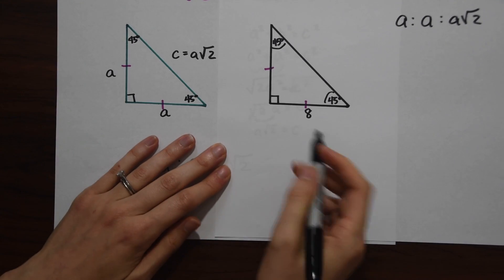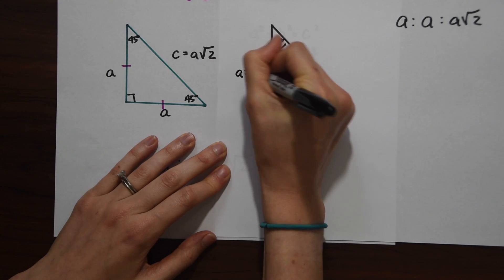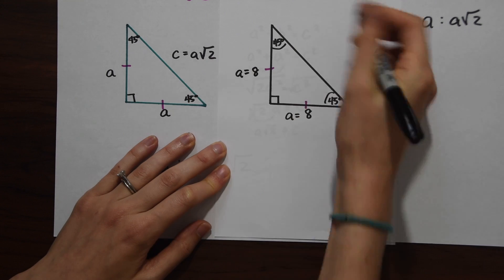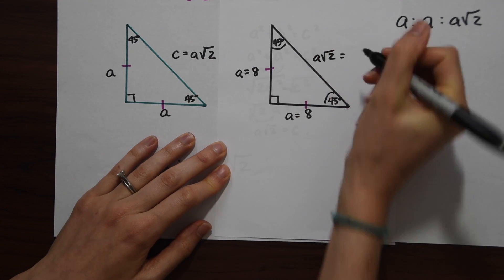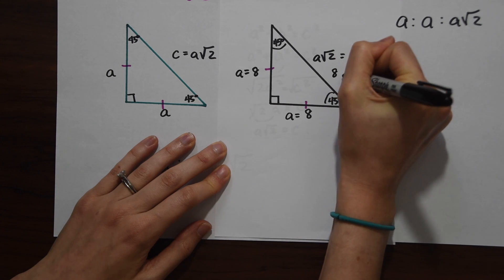If we know this side is a equals 8, we know that this side is also going to be a equals 8. And if we know that c is equal to a radical 2, we already know what a is—it's 8—so we could just fill this in and the answer is 8 radical 2.